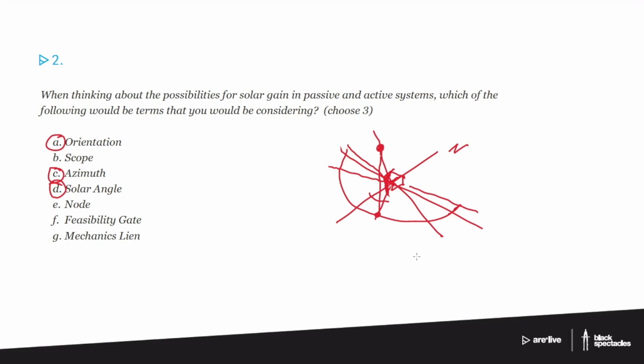Those are the three terms. Scope clearly would be a useful thing to know about. That just means the amount of work. Node is about a totally different concept. Feasibility gate is one of my favorites on this particular one because I just made that up and I thought it sounded good. Mechanics lien is about ownership of a project and whether the project actually, whether you're being paid for the work and laying claim for pay for the work. So that's a totally different thing.